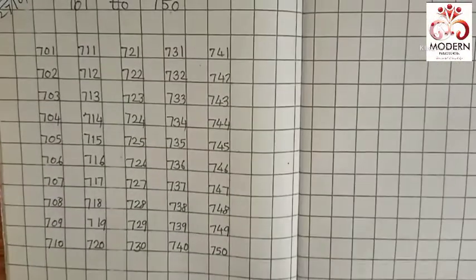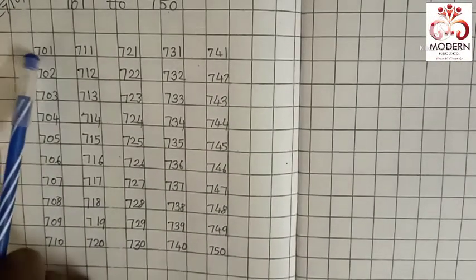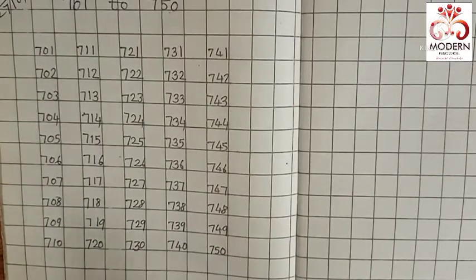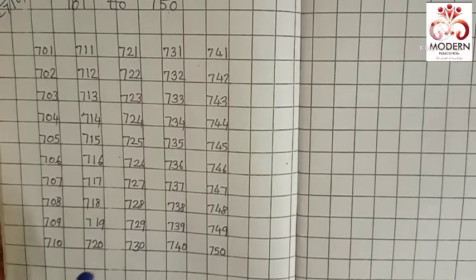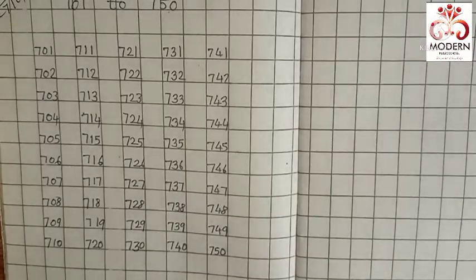Okay students, now we have completed our number names, numbers 701 to 750. Read and write them in your notebook properly. We will see the second part in the next session. Till then, bye bye.